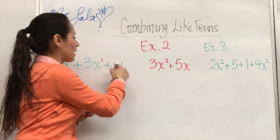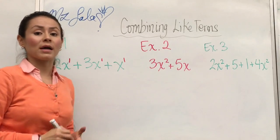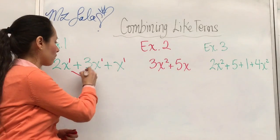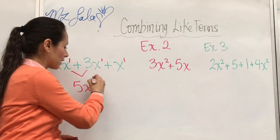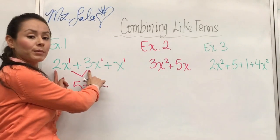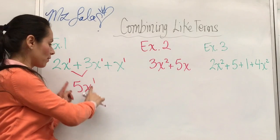And this one also means 1. Therefore, we can combine all these terms together. So we would have 5x to the first. This power doesn't add up. You only add up the coefficients and numbers in front of the variables.